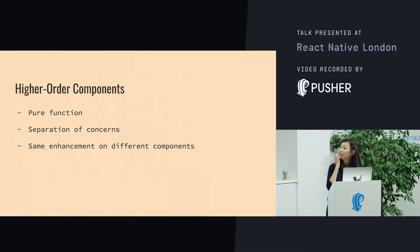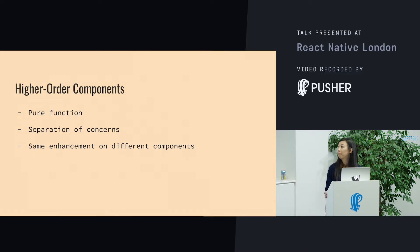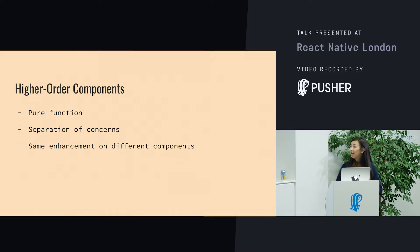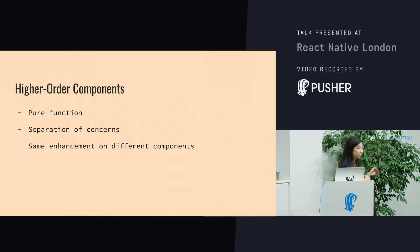In summary, higher-order components are pure functions. It means you can clean up a component and take out all the handlers, any lifecycle methods and stuff, and separate them out so that you have a pure presentational component. It's a lot easier to read. And if you have a bunch of higher-order components, you can reuse them and wrap multiple components with them elsewhere in your code.